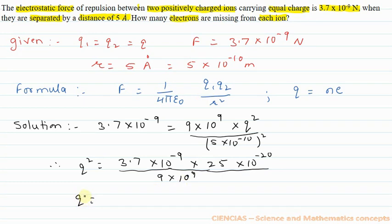we get charge on each is 3.2 × 10^-19 coulomb.